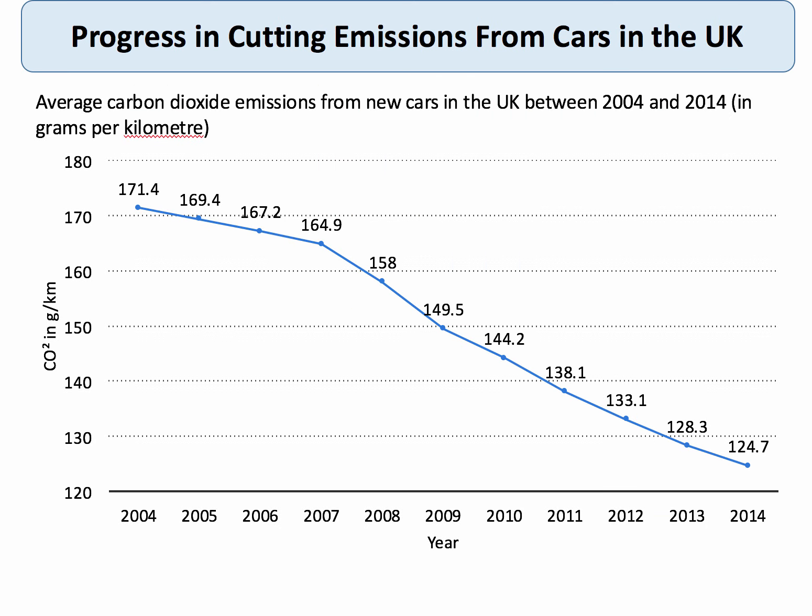There has been quite significant progress in cutting emissions. This chart shows average CO2 emissions from new cars in the UK over the last ten years or so, and as you can see, measured in grams per kilometre travelled, there has been a sizable and significant fall in emissions. So policy interventions seem to have worked — the car industry as a whole is producing greener, more fuel-efficient vehicles, and that's to be welcomed.